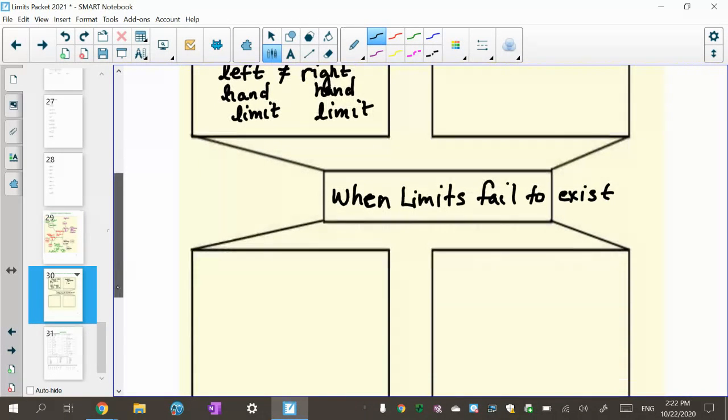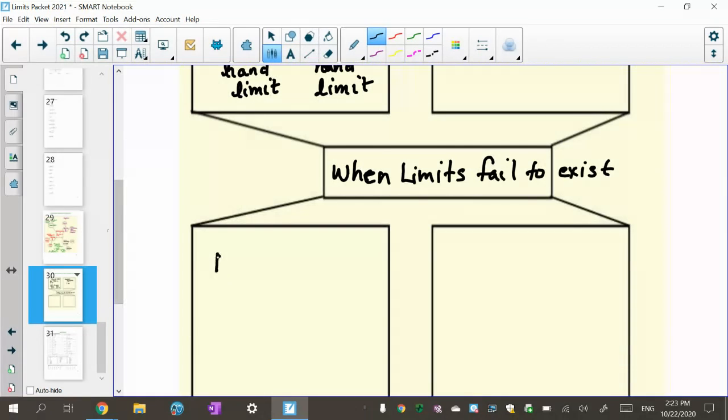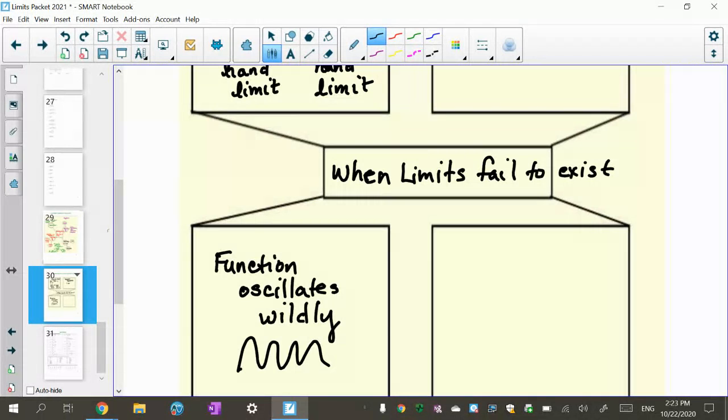Another time when limits fail to exist is when a function oscillates. And they always like to use the word wildly, which I think is pretty cool. That if it goes up and down like this, there's no limit. It's oscillating wildly and there's no limit.